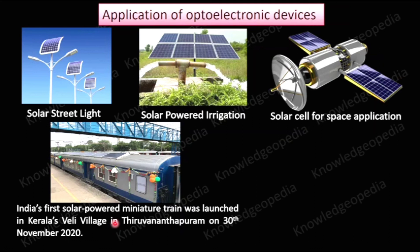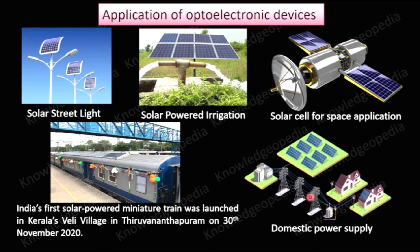Many people are now visiting to see how that solar train runs. Apart from outdoor applications, solar energy is also very useful for household use — for domestic power supply. Solar panels installed at homes convert solar energy into electrical energy for our domestic purposes. These are just a few applications of optoelectronic devices; there are many more.